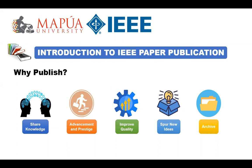The first one is publishing helps you share your research with the global scientific community. The next one is adding a peer-reviewed publication to your CV can lead to career advancement and prestige. Number three, peer review helps improve the quality of your article or paper. Number four is spurring new ideas — the process of writing and undergoing review often leads to new ideas for future research projects. And finally, publishing ensures that your article is accessible for future generations.